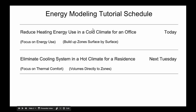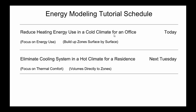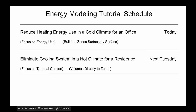Today we're going to focus on just one zone at a time with Honeybee, although you can certainly do much larger models. We're going to focus on reducing energy use in a cold climate with a program of an office. Next Tuesday is going to be the big focus — cooling, eliminating a cooling system while still trying to make a space comfortable. It's going to be in a hot climate, and it's going to be for residents. I'm trying to cover a range of typical building types across these two sessions.